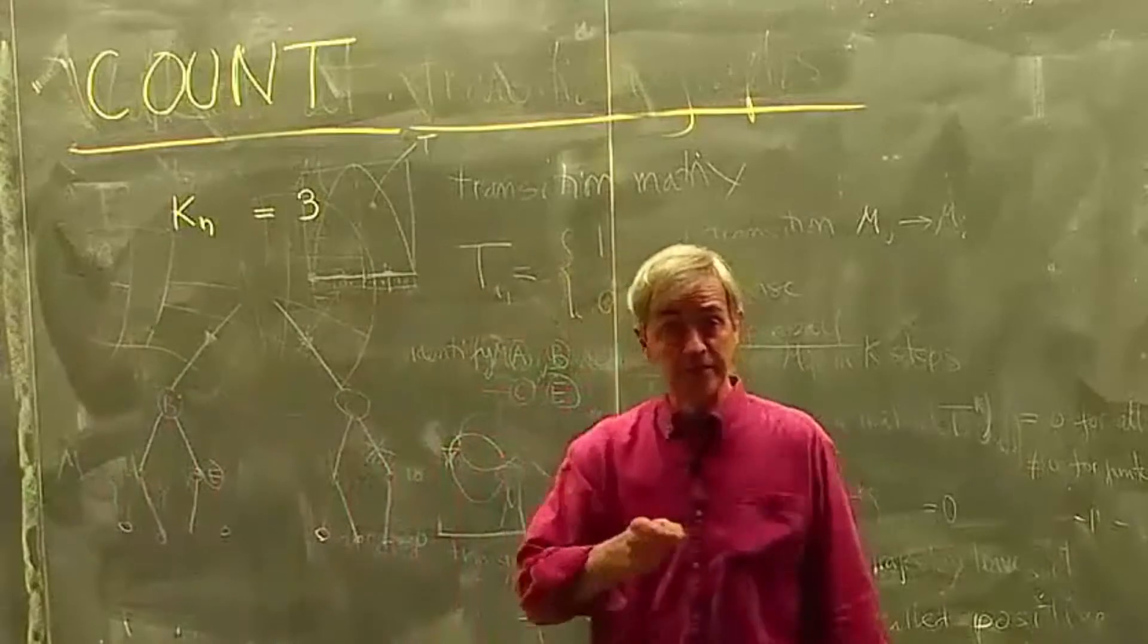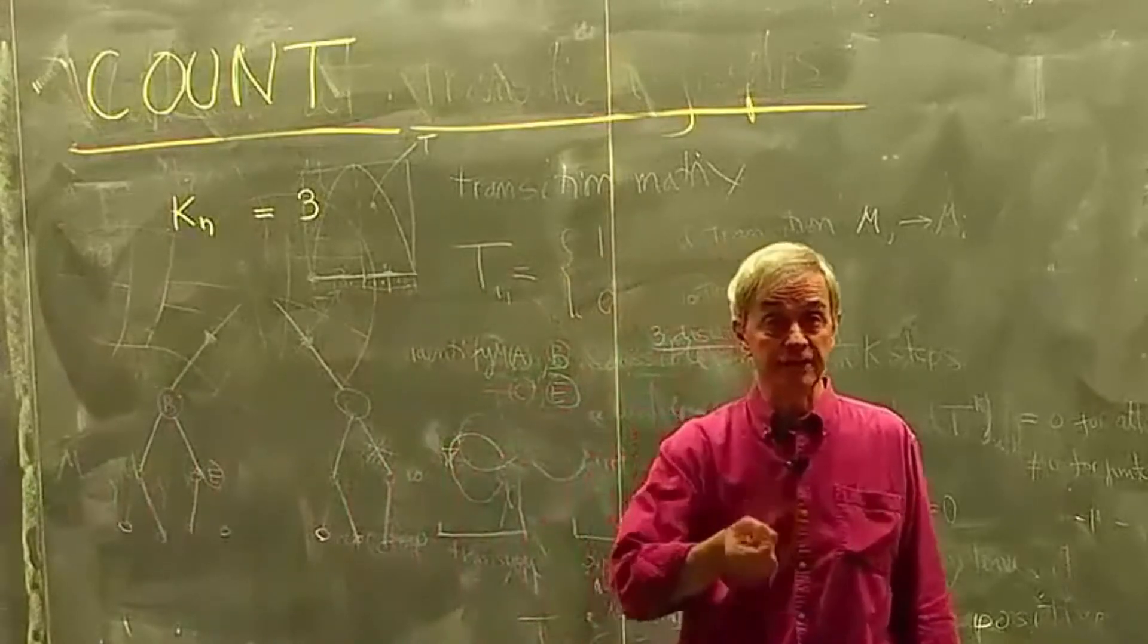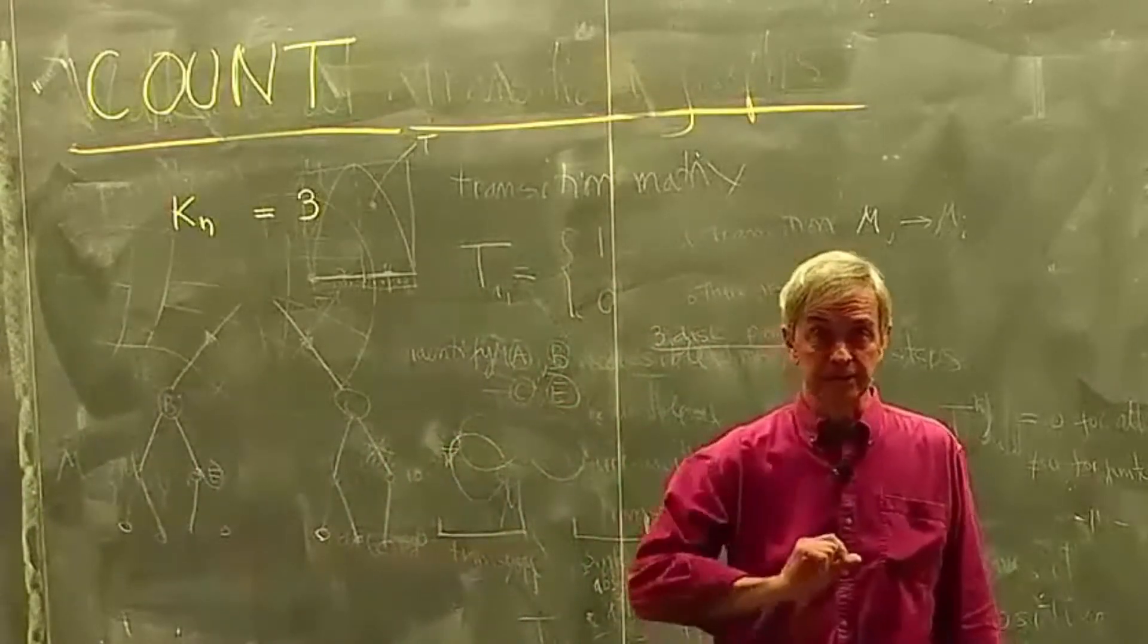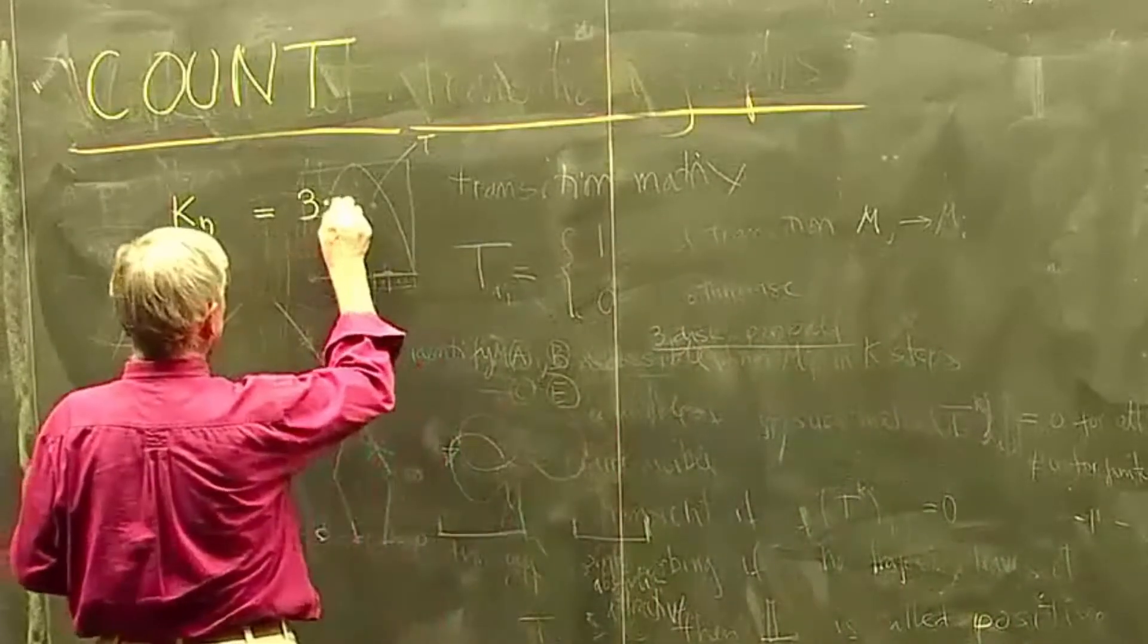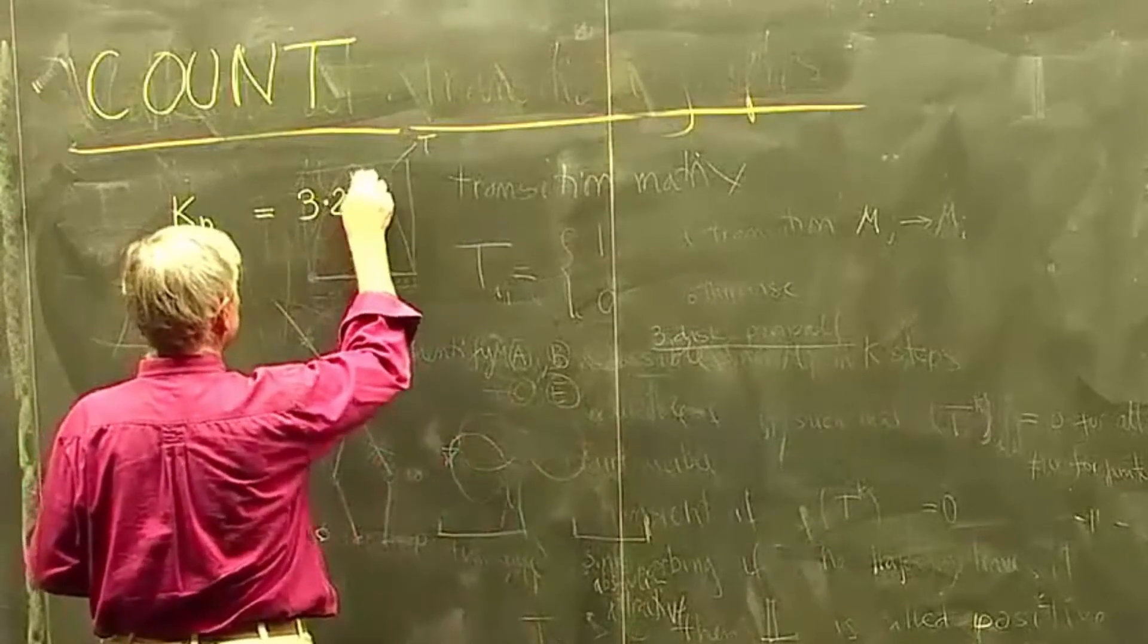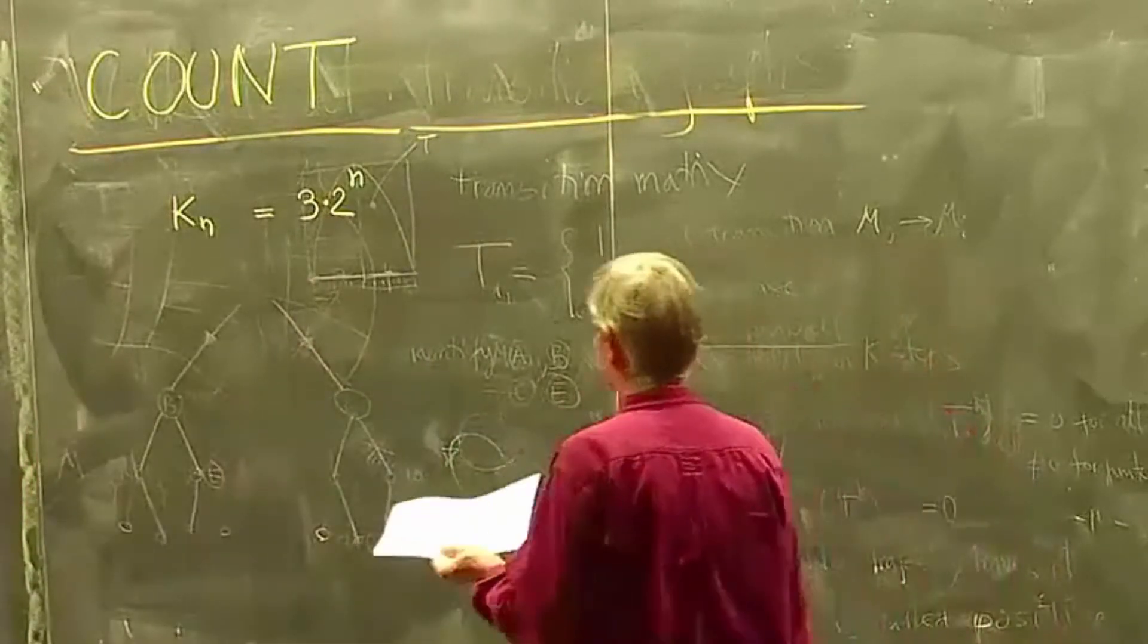But once I've taken my initial choice, the next step, so the first bounce between two discs, there are only two choices. And in n time steps, there will be 2^n of them. Now that's very simple.